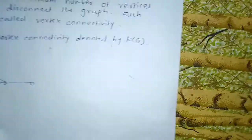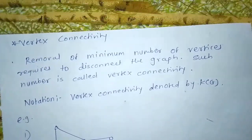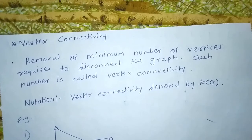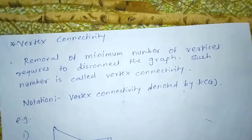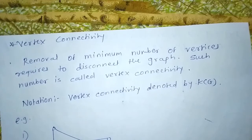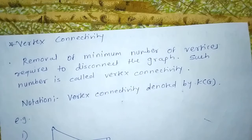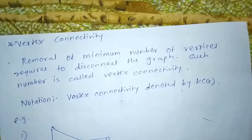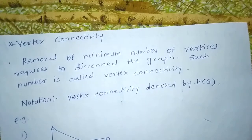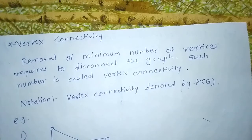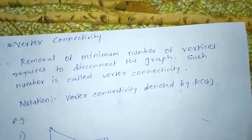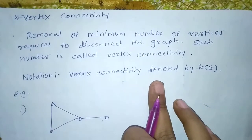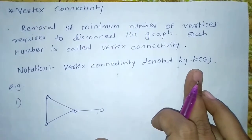The second point is vertex connectivity. The definition of vertex connectivity is the removal of the minimum number of vertices required to disconnect the graph. Such number is called vertex connectivity. Vertex connectivity is denoted by K of G.